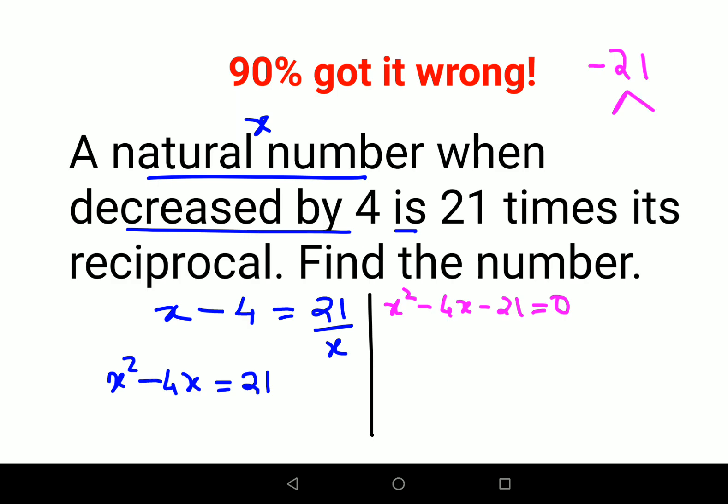The products are 7 and 3, and we want a minus 4 as the sum or difference. So we'll do minus 7 plus 3, that gets you minus 4, and minus 7 times 3 gets you minus 21.